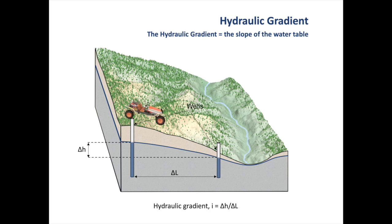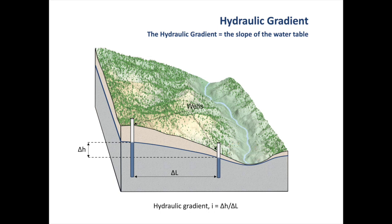Let's say you park your car on a hill slope and forget to put on the handbrake — it's going to roll down the slope and end up in the river. The same is true for groundwater. It flows from areas of high water levels to areas of low water levels. We say that groundwater flows from areas of high hydraulic head to areas of low hydraulic head along the steepest hydraulic gradient.